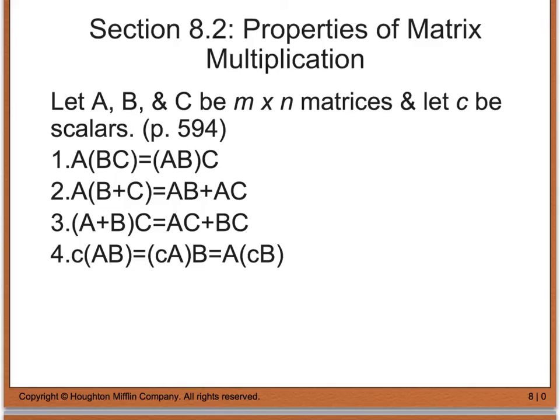Here is a list of properties — these are also listed on page 594 of your textbook. These properties tell you that matrix multiplication is associative, the distributive property applies when you multiply, and the associative property when dealing with scalars also applies.